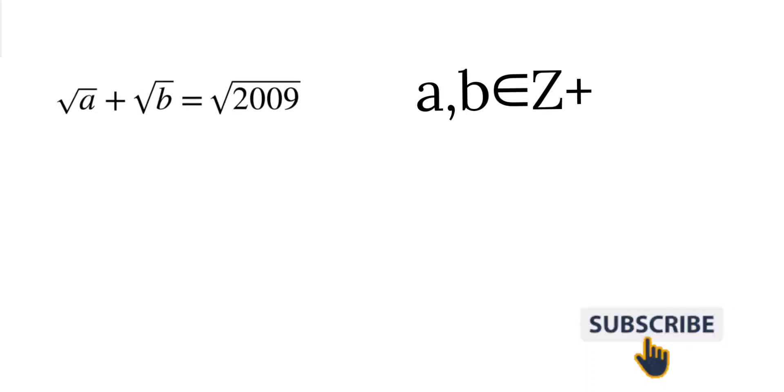Hello everyone, today we are going to solve this question which is from British Math Olympiad 2009 Round 2 Problem Number 1. We have to find all a, b which are positive integers. If you want to give it a try, pause the video, otherwise keep watching.